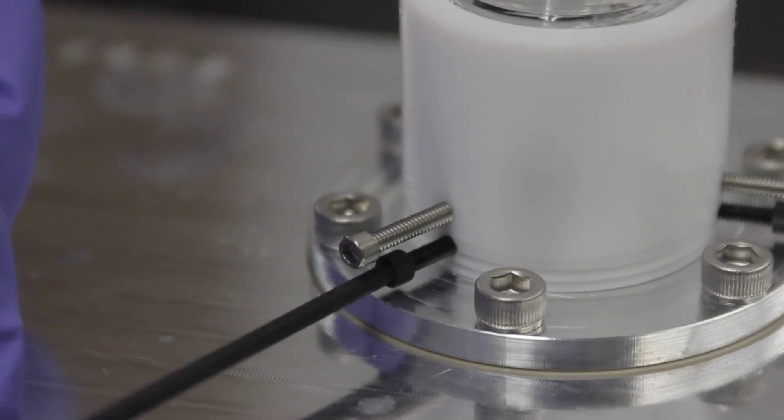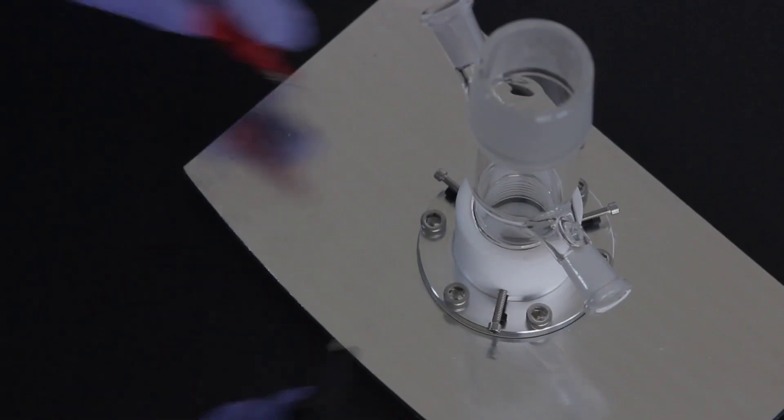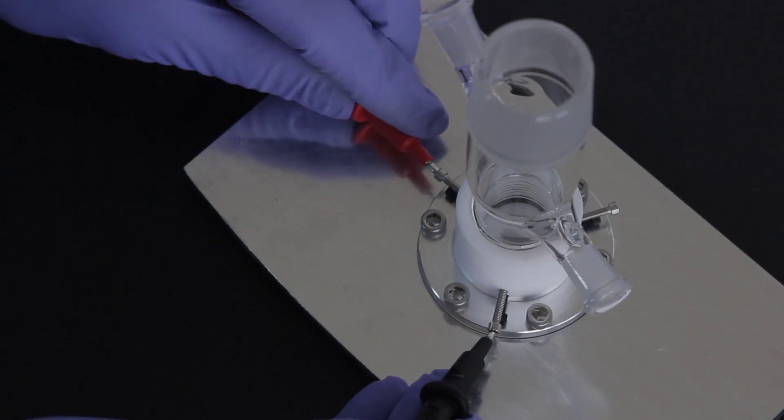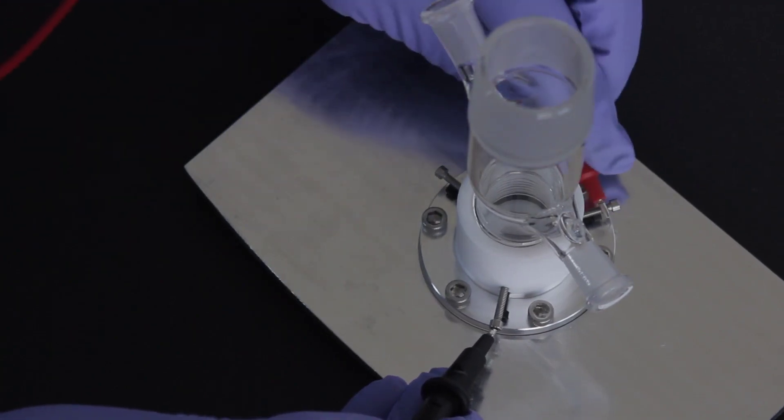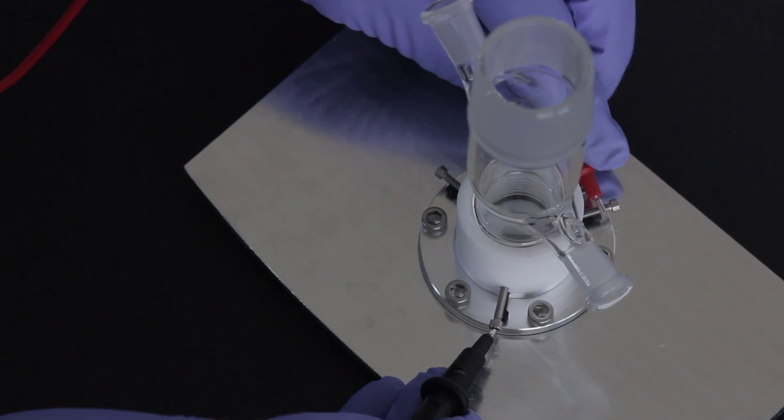Loosen the nylon pin retaining screws to allow the pins to extend and make contact with the working electrode. It's a good idea to test the electrical contact at this point by measuring the resistance between two stainless steel screws.